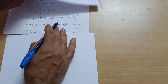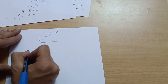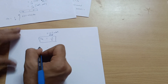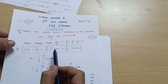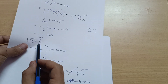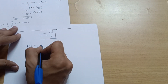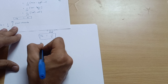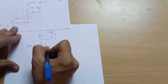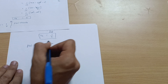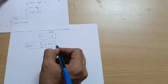Now substitute bₙ into the series. Since a₀ = 0 and aₙ = 0, those terms vanish. The Fourier series becomes: f(x) = Σ (n=1 to ∞) bₙ sin(nx) = Σ (n=1 to ∞) (1/n) sin(nx).